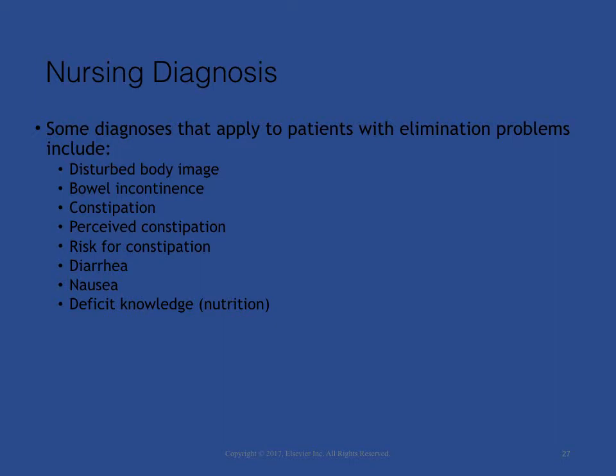The nursing assessment of the patient's bowel function reveals data that indicate an actual or potential elimination problem, or a problem resulting from elimination alterations. Some diagnoses that apply to patients with elimination problems include disturbed body image, bowel incontinence, constipation, perceived constipation, risk for constipation, diarrhea, nausea, and deficient knowledge. It is important to establish the correct related-to factor for a diagnosis.